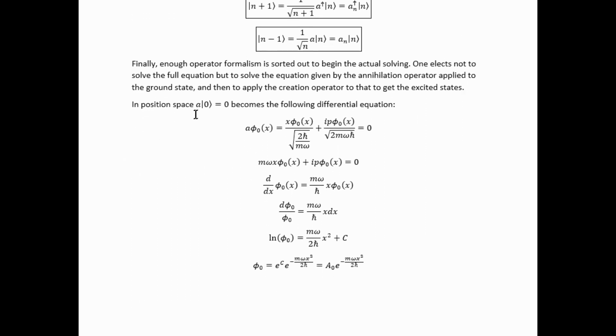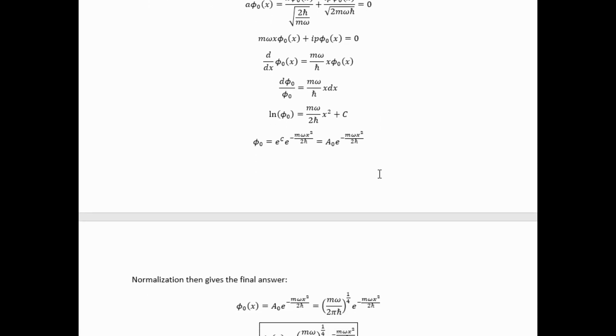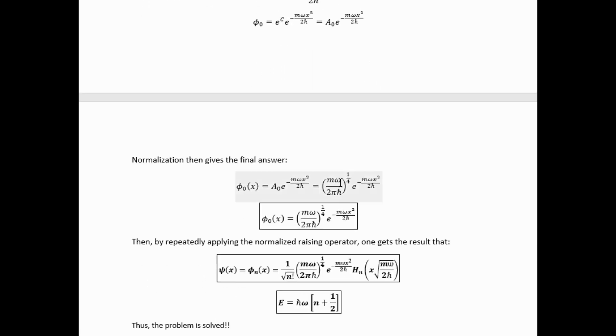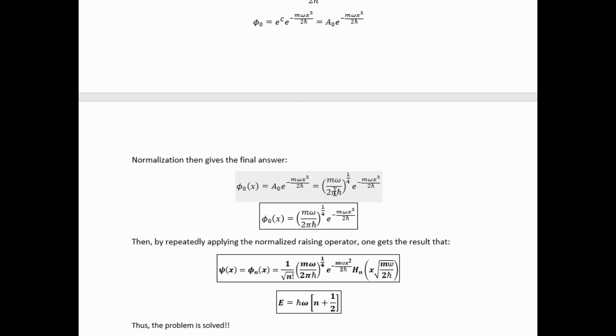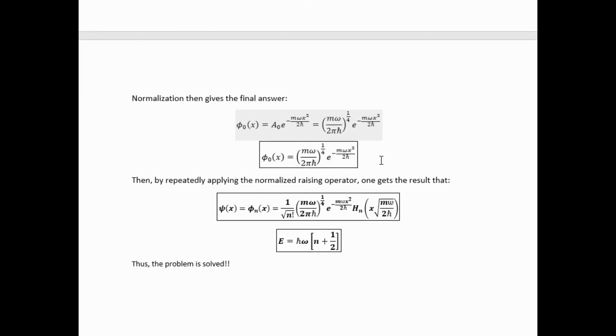In position space, this relation, A acting on the vacuum, becomes this differential equation. We can rearrange that equation and then integrate it to get this solution here. Then if we pick this A0 constant to have this value, we find it's normalized. So this is the normalized ground state solution.